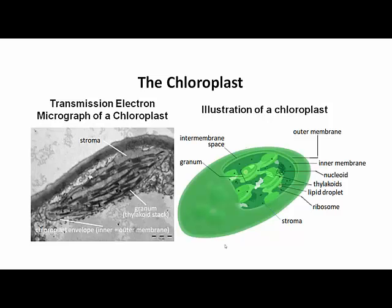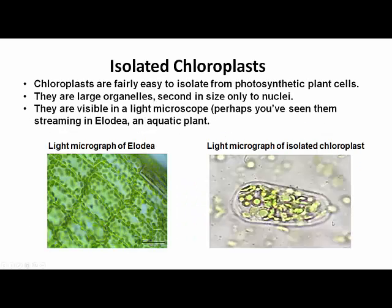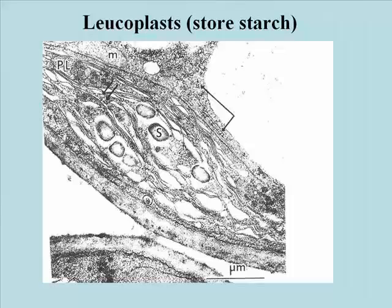The chloroplast is the site of photosynthesis in green plants and algae. At the end of a day, plant cell chloroplasts will be filled with starch, which is formed when the sugar made by photosynthesis is converted into the storage form, the starch polysaccharides.